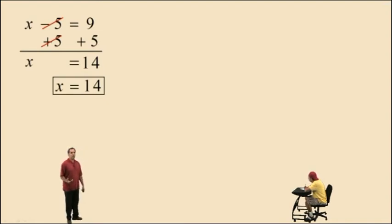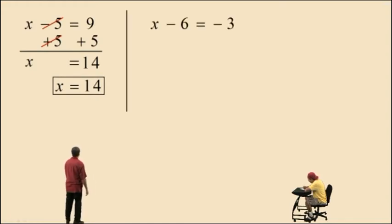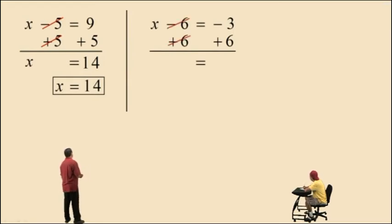Remember, to verify that your answer is correct, just take your result, x equals 14, and substitute into the original equation for the variable term and you should end up with a true statement. Okay, let's go to x subtract 6 equals negative 3. To isolate the variable term here, we need to add 6. Because negative 6 plus 6 is 0, they cancel, leaving you with an x on the left-hand side and negative 3 plus 6 is a positive 3, so your answer is x equals 3.